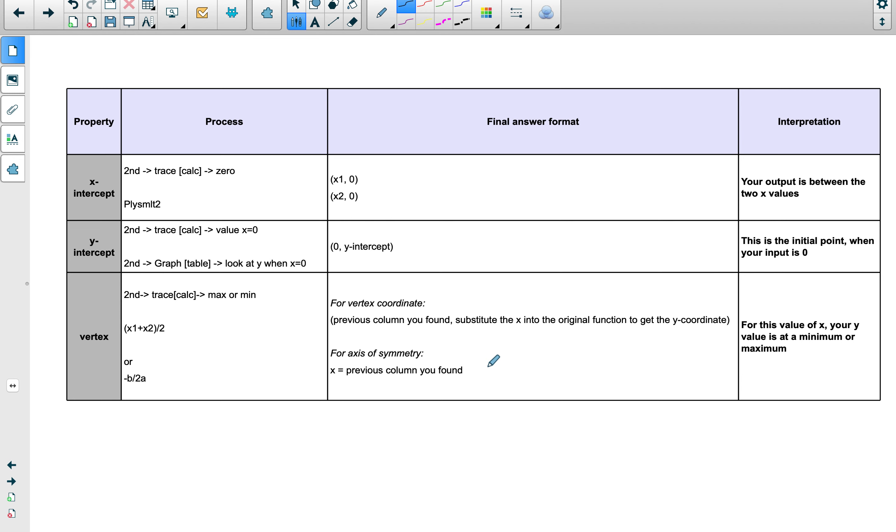I will keep on referring to this table, so this is a summary of everything that you'll need in terms of properties. This is how you're going to find it using the calculator. Some of them have different methods, so the vertex has three different methods. This is the final answer format and this is the interpretation for the question.